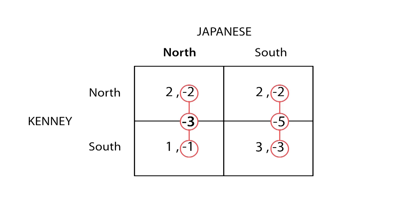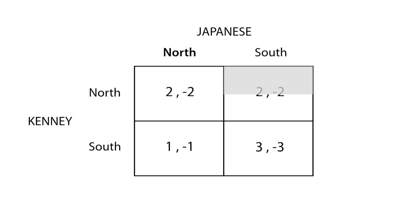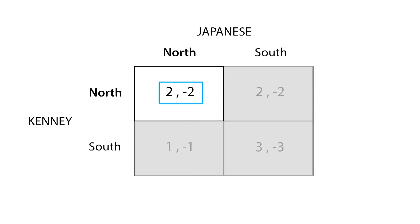We must then proceed by eliminating dominated strategies. For the Japanese, strategy go north weakly dominates strategy go south. Therefore, we eliminate the strategy go south for the Japanese, since it is dominated by strategy go north. Now that we only consider the Japanese going north, Kenny's strategy go north is strictly dominant over strategy go south, which will be eliminated. Therefore, north-north is the weak dominance equilibrium.